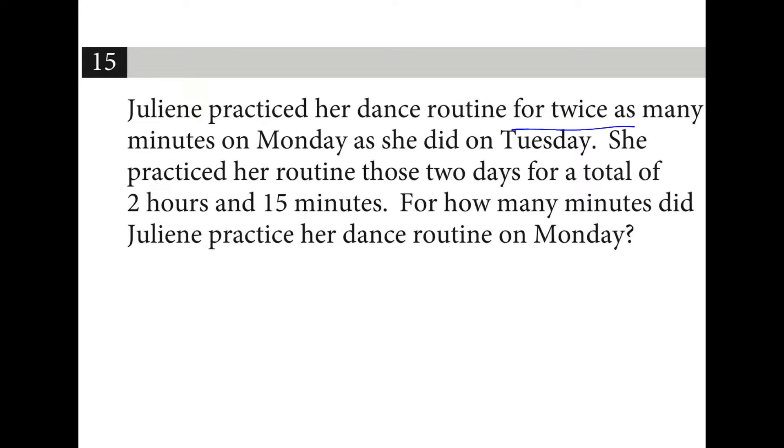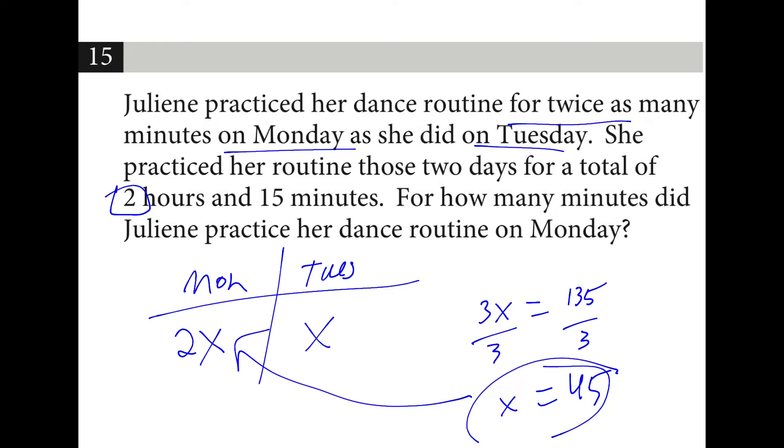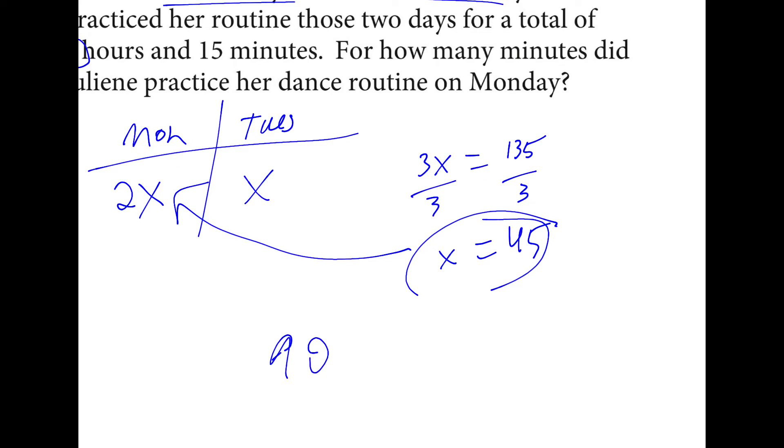Practice twice as many minutes on Monday as she did on Tuesday. So Tuesday is x, then Monday is 2x, and if we add all this together, we get 2 hours and 45 minutes. So 2 times 60 plus 15 is 135. If I divide both sides by 3, x is equal to 45 minutes. And we want to know how much on Monday, so we take that times 2, and the answer is 90 minutes.